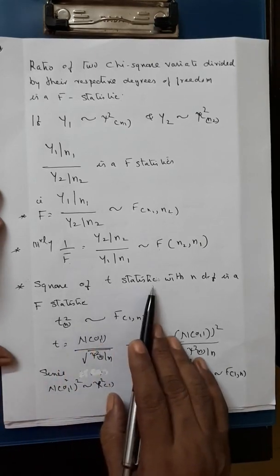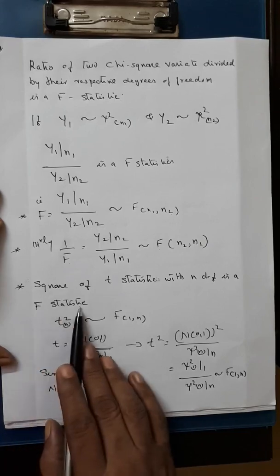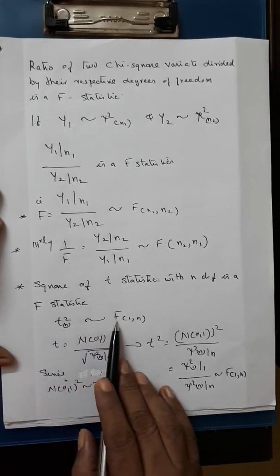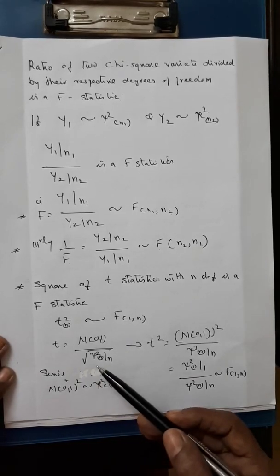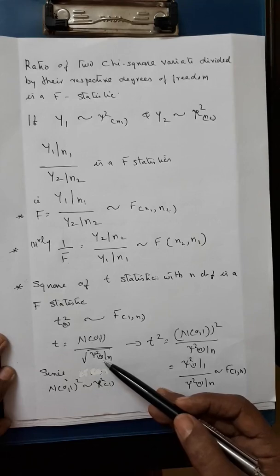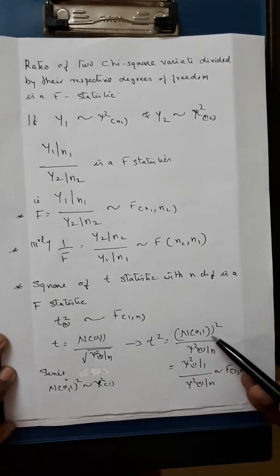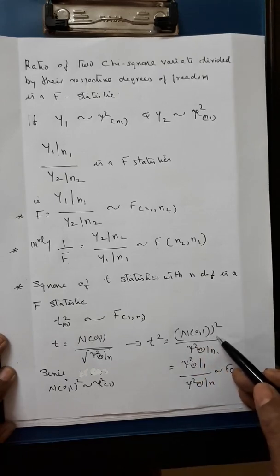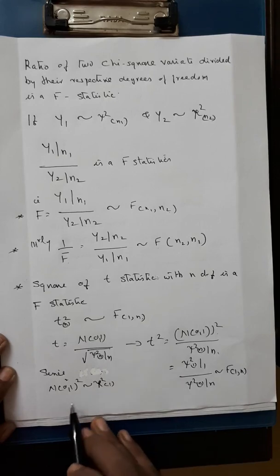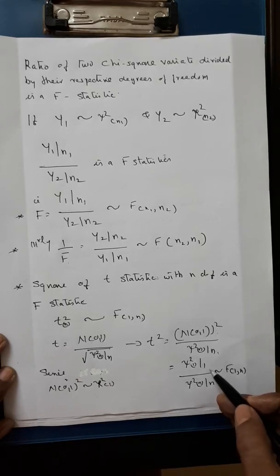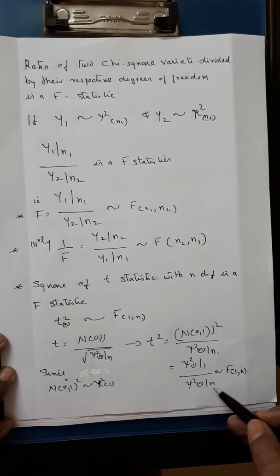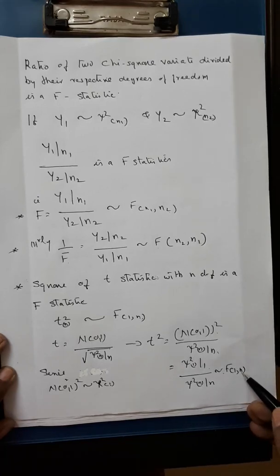The square of a t statistic with n degrees of freedom is an f statistic. That is, t(n) squared follows f distribution with 1 and n degrees of freedom. We know that t equals N(0,1) divided by root of (chi-square(n) by n), therefore t-squared equals N(0,1) squared divided by (chi-square(n) by n). Since N(0,1) squared follows chi-square(1), we can rewrite this as (chi-square(1)/1) divided by (chi-square(n)/n), which follows f(1, n) by definition.